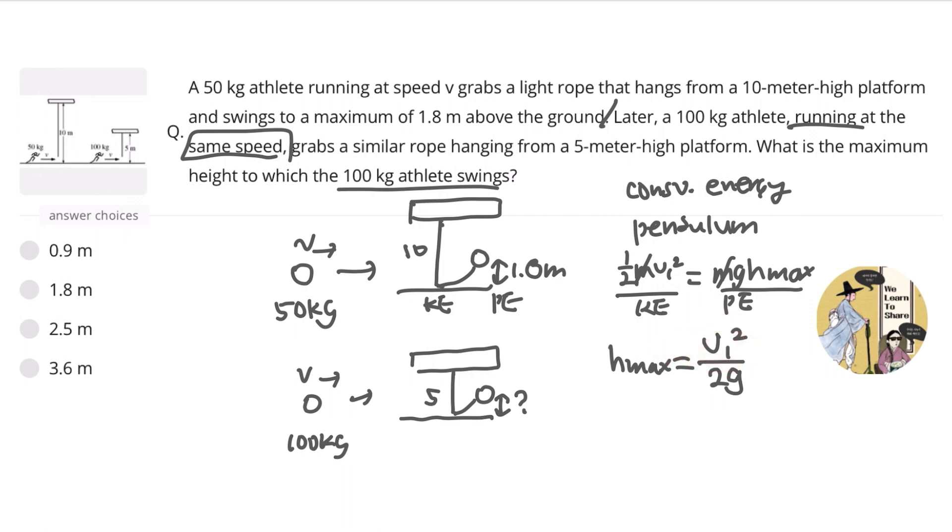And therefore, both athletes would have the same height because they have the same v₁². Since the 50 kg athlete reached a maximum of 1.8 m above the ground, it will be the same for the 100 kg athlete. The 100 kg athlete would also reach 1.8 m from the ground.